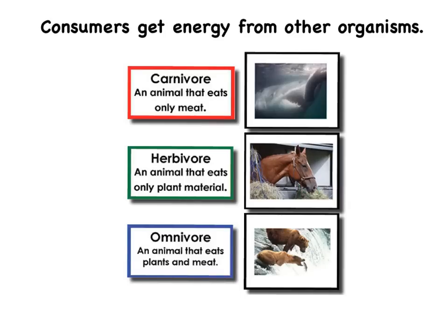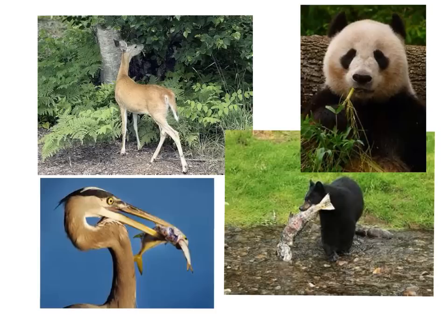Consumers get energy from other organisms. There are three types of consumers. A carnivore is an animal that eats only meat. A herbivore is an animal that eats only plant material. And an omnivore is an animal that eats plants and meat. A consumer is any organism that can't make its own food, and consumers have to feed on producers or other consumers to survive. Deer are herbivores, which means that they only eat plants, which are producers.